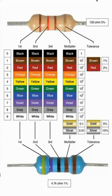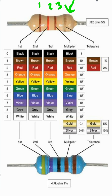Let's understand how to read the value of a resistor. As you can see in the picture, the resistor has different colors on its body. Usually there are three colors separated by some distance and then a fourth color. There could be four lines of colors or five lines of color. In this picture there are four lines, so we have the first, second, third, and fourth bands.